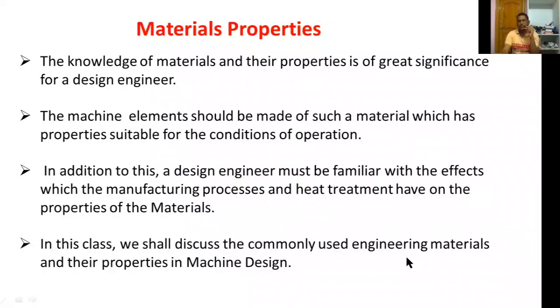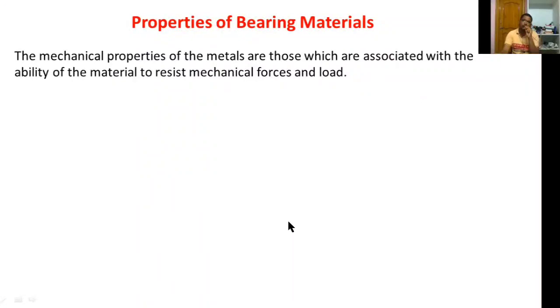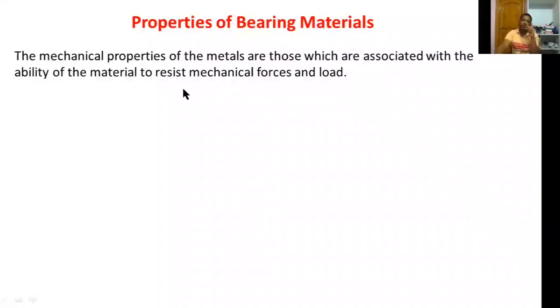We shall discuss the commonly used engineering materials and their properties in machine design. The mechanical properties of metals are those which are associated with the ability of the material to resist mechanical forces and loads.